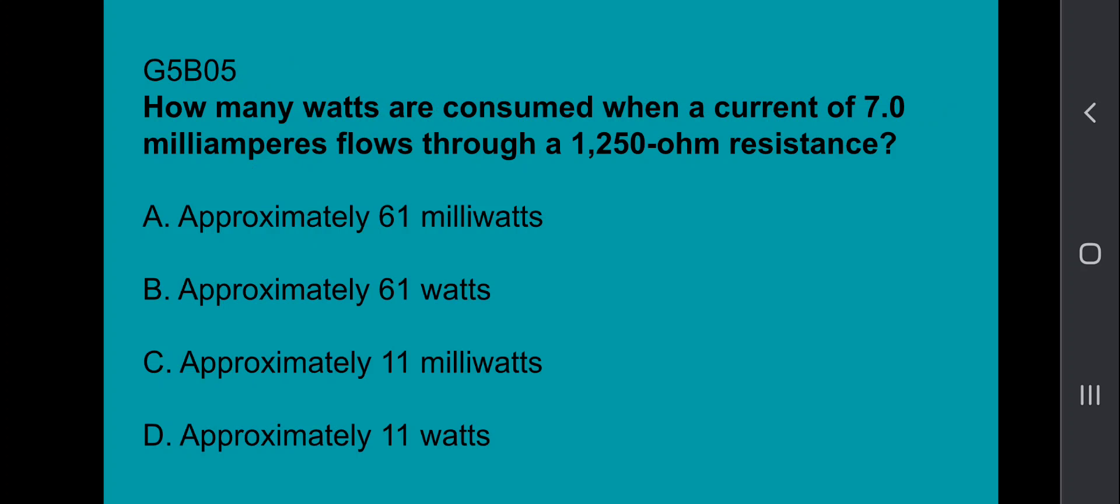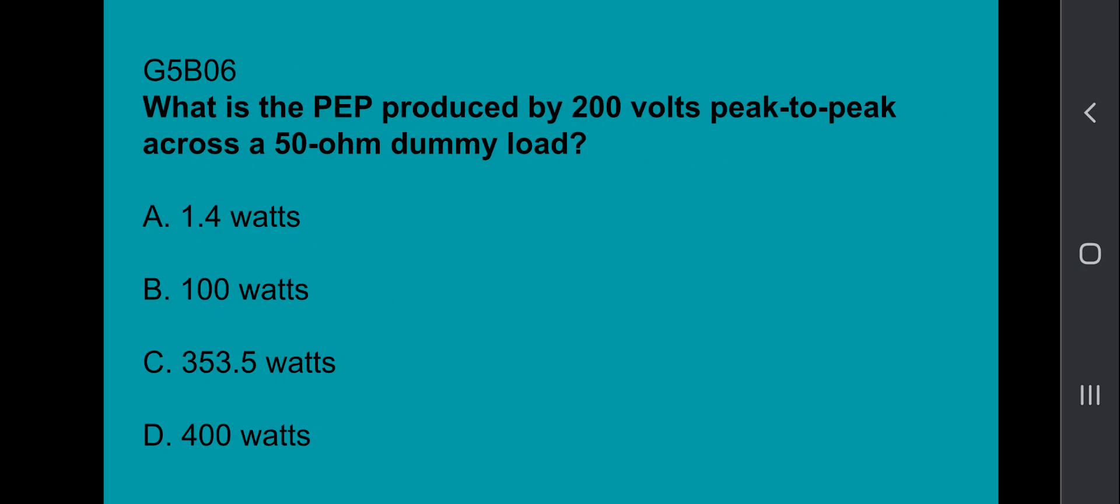G5B05, how many watts are consumed when a current of 7.0 mA flows through a 1250 ohm resistance? That's approximately 61 milliwatts. G5B06, what is the PEP produced by 200 VDC? 100 watts.